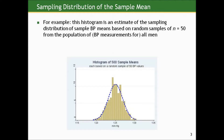For example, just to recall, this histogram that we looked at in the last section is an estimate of the sampling distribution of sample blood pressure means based on random samples of size 50 from the population of blood pressure measurements for all men. We estimated that by taking 500 random samples, because it wouldn't be possible to take all possible random samples of size 50 and display the results. So what we see there is just an estimate of this underlying distribution that would include the sample means for every possible random sample.